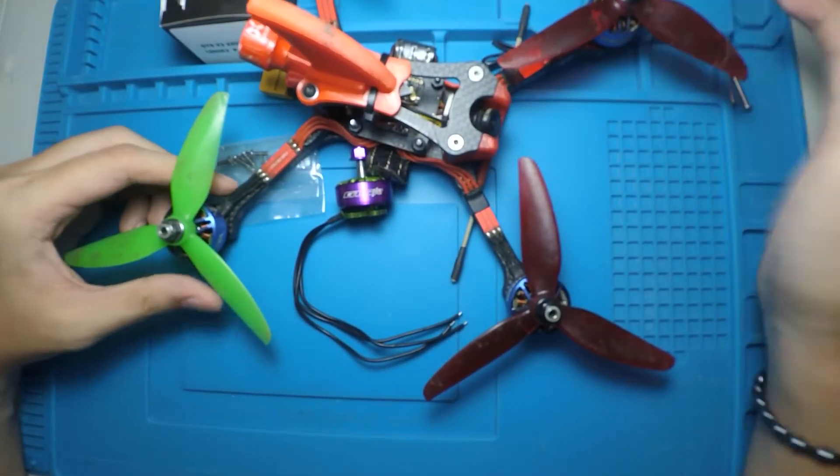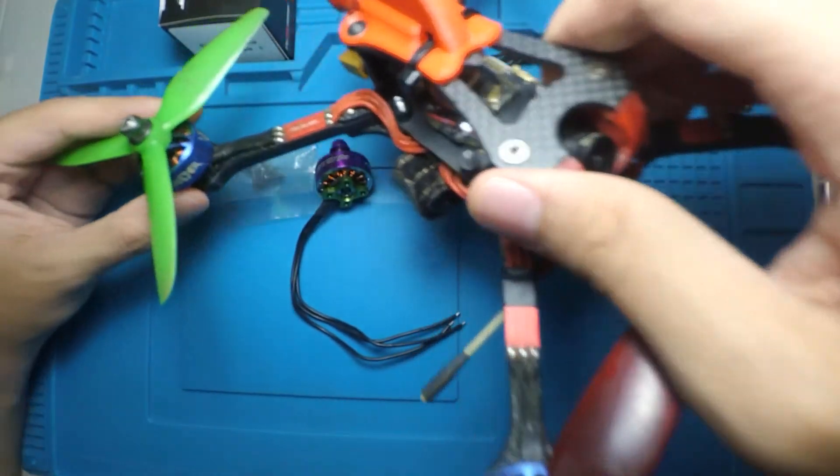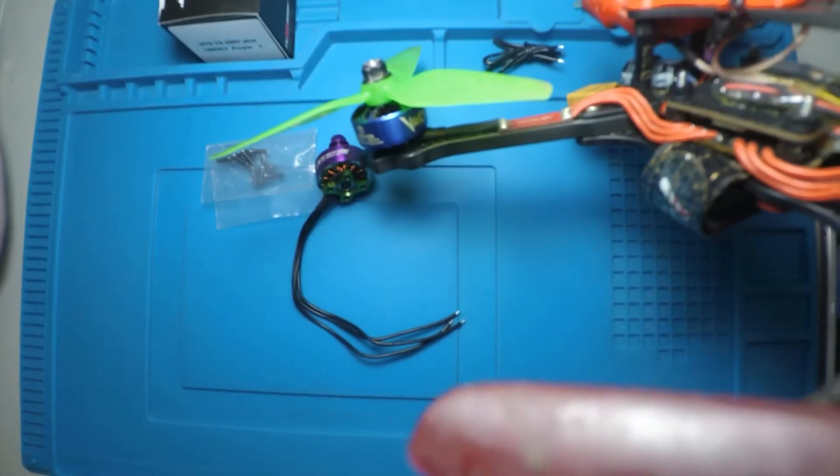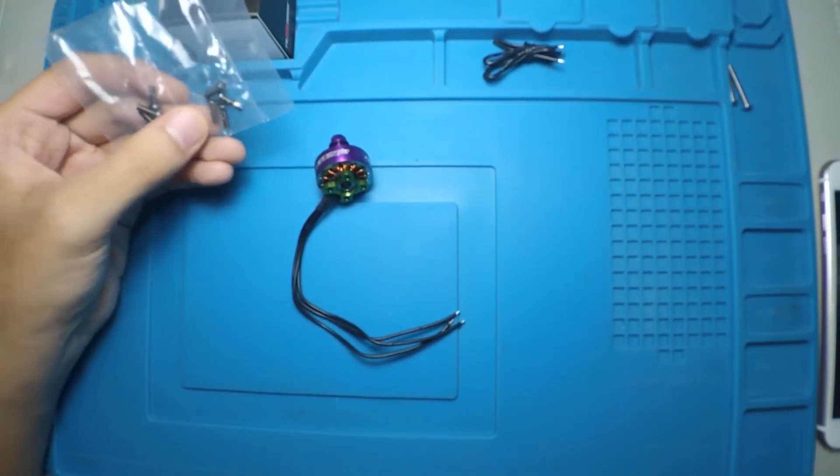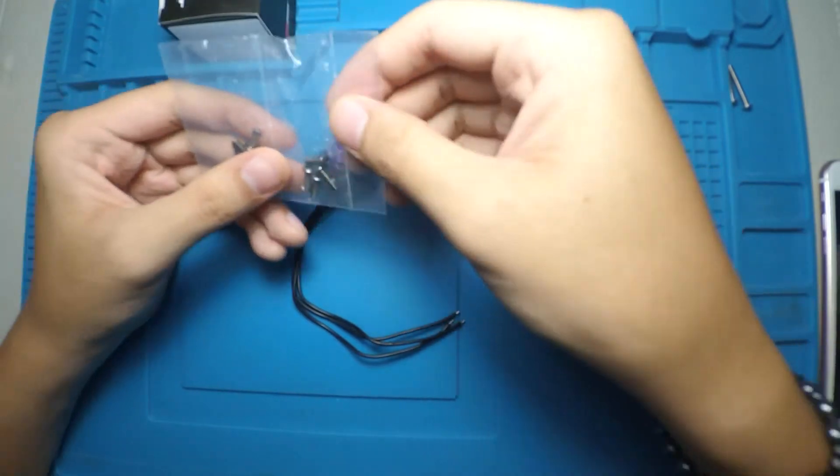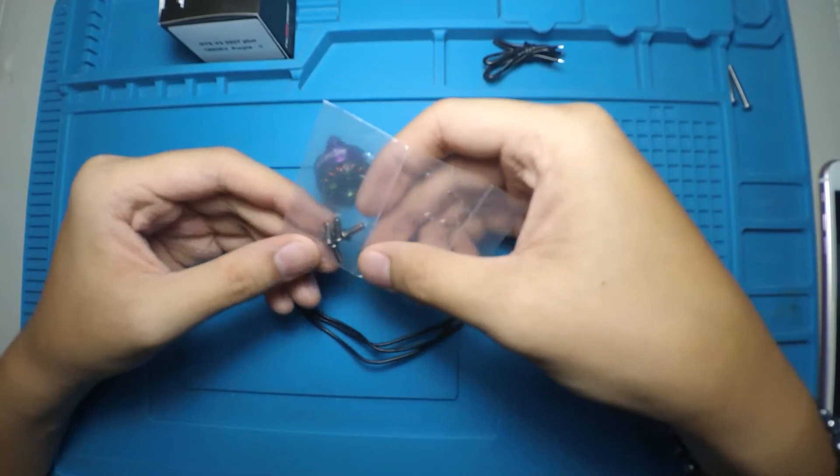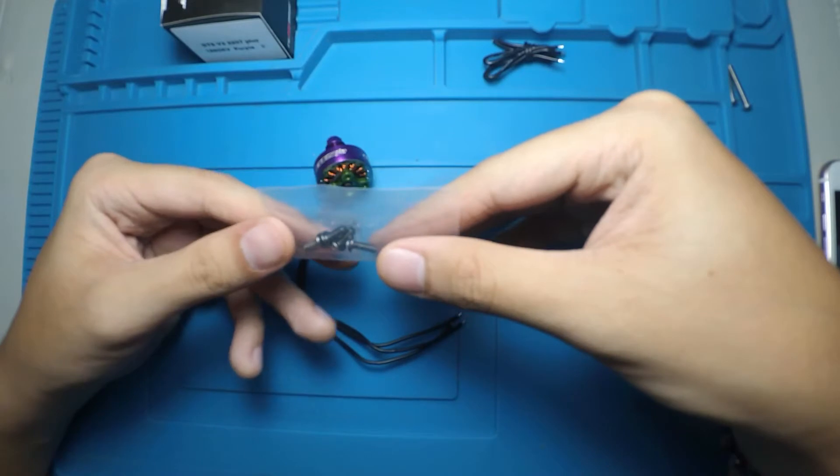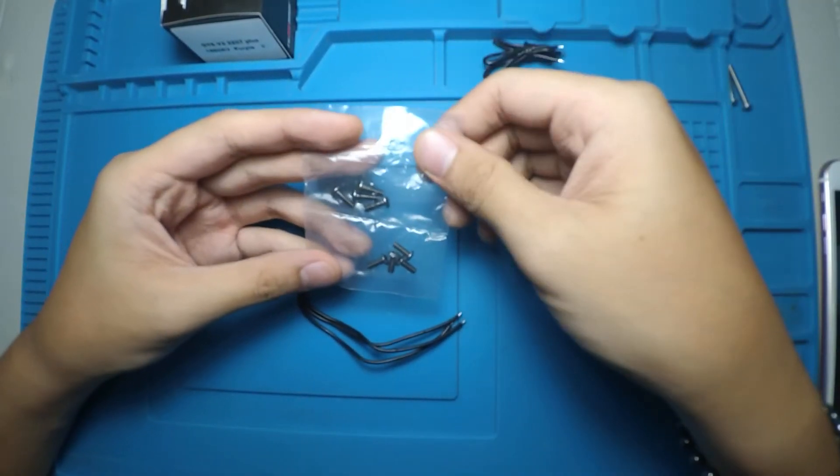So this sports a 6 millimeter arm, and having the screws included with the motor for 6 millimeter arms is really good. Really limited number of frames in the market today come with 4mm, so I think that they made a good decision by going with the longer option screws for 6 millimeter arms.